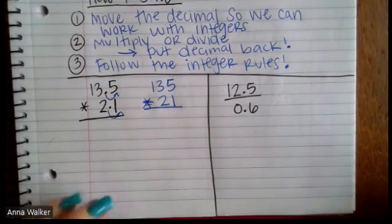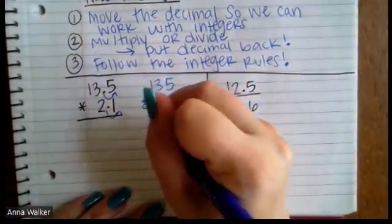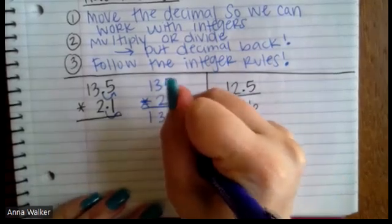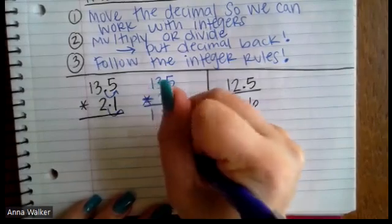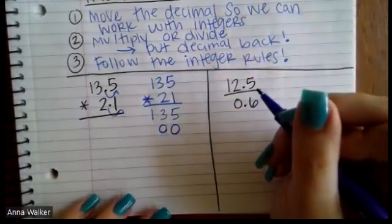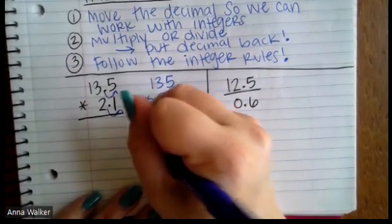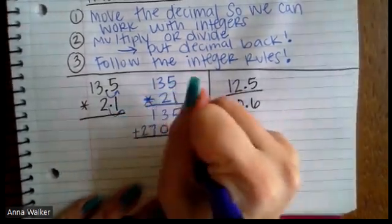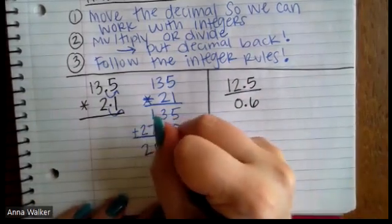So if we go through and multiply that out, one times everything is just going to be itself. I'm going to put a placeholder of zero. Five times two is 10, carry the one. This should be 7, 27. And then if I add all of this up, this should be 2,835.